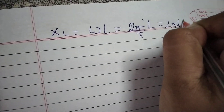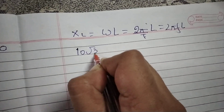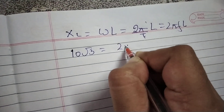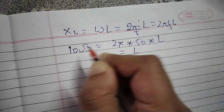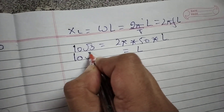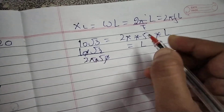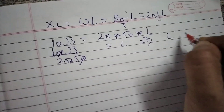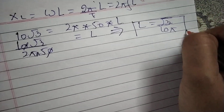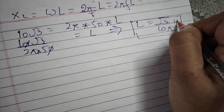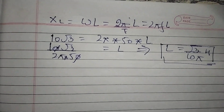Since f = 50 hertz, we have XL = 2π × 50 × L. So L = 10√3 divided by (2π × 50). This gives us the required inductance L. Thanks for watching — please don't forget to like, subscribe, and share.